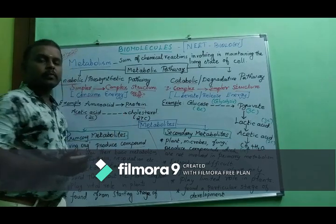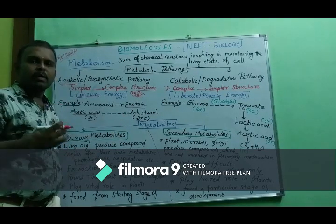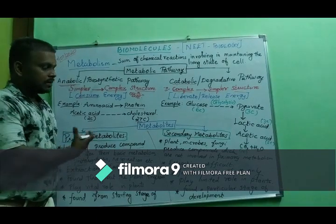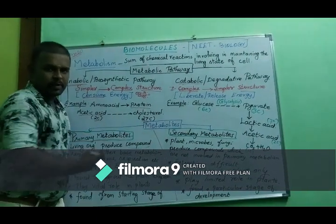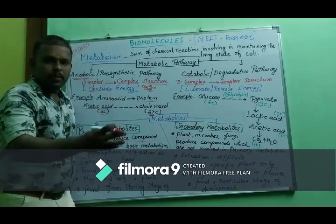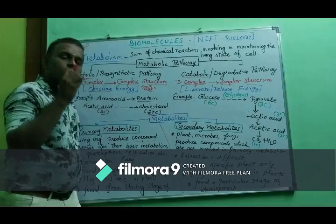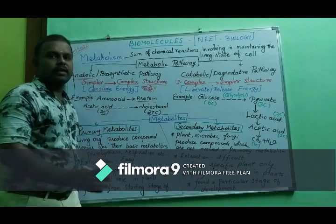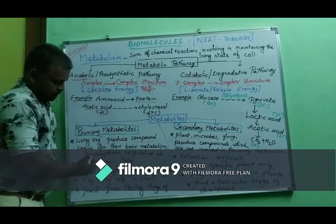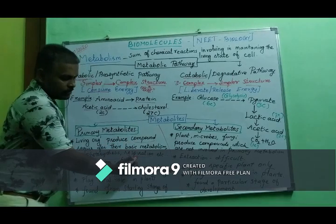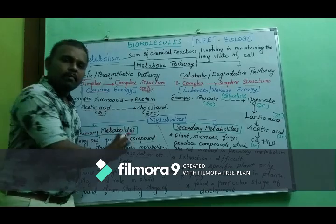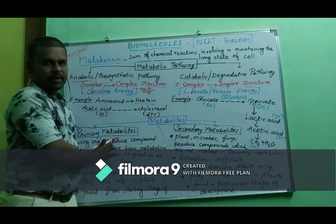Now we move on to the next topic: Metabolites. Plants can produce particular compounds which are mostly useful for the plant itself — this is primary metabolism. Primary metabolism includes photosynthesis and respiration, which are important functions. These compounds are called primary metabolites.